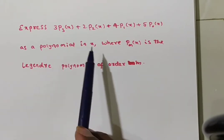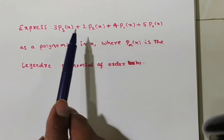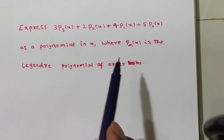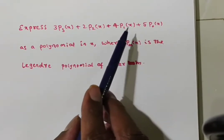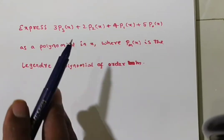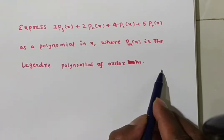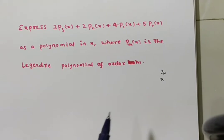So friends, you see they are given P₀, P₁, P₂, P₃ only. So these all are Legendre polynomials for m equals 0, 1, 2, 3.